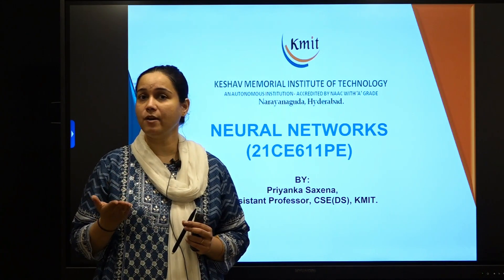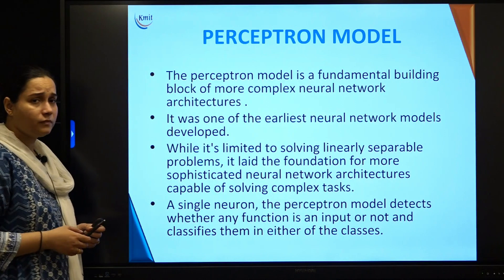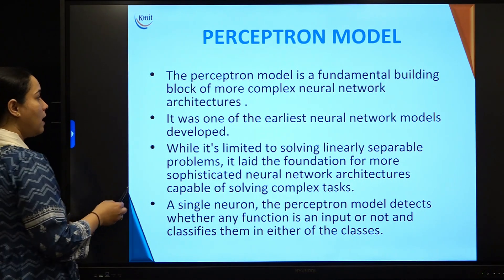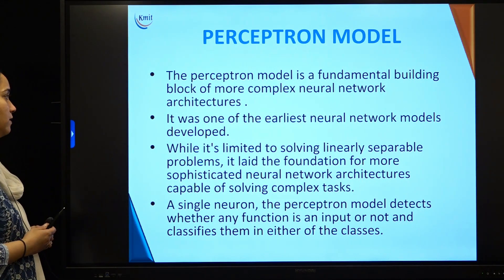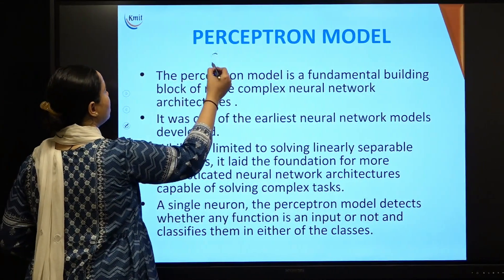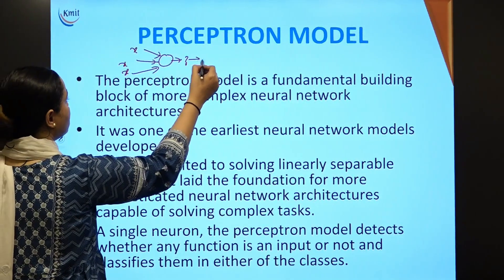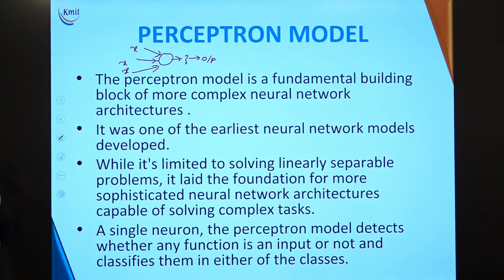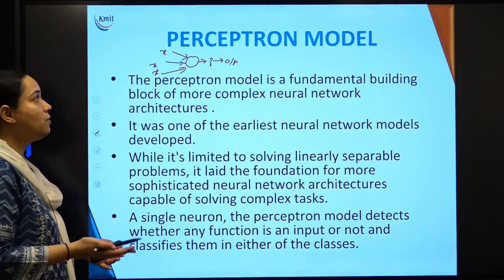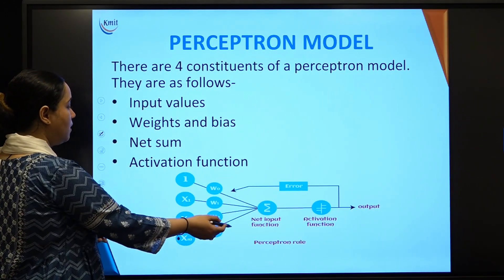Before the neural network was formed, what was present? I already explained the McCulloch-Pitts model in previous classes. Today I am going to concentrate on the perceptron model. The perceptron model is a fundamental building block of more complex neural network architectures and was one of the earliest neural network models developed. In the McCulloch-Pitts model, you took inputs, made a decision, and got an output — but the disadvantage was there was no learning.